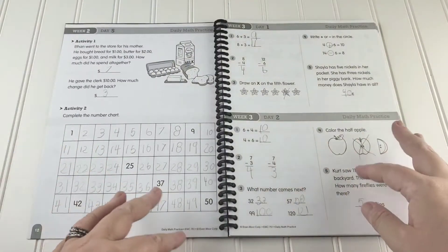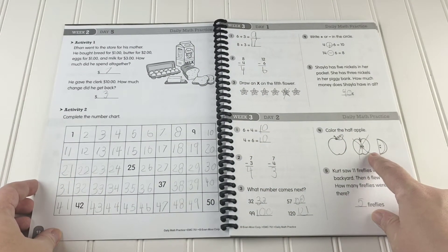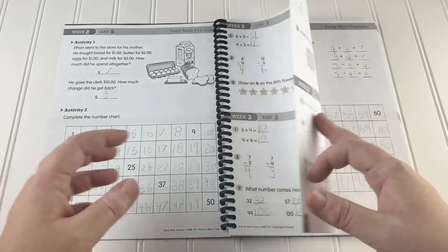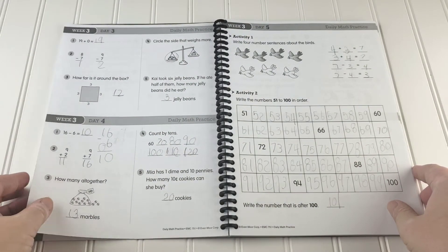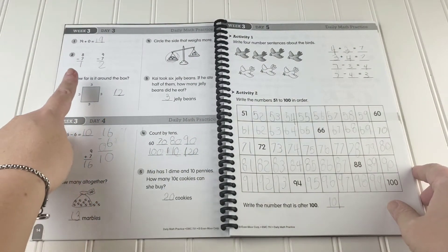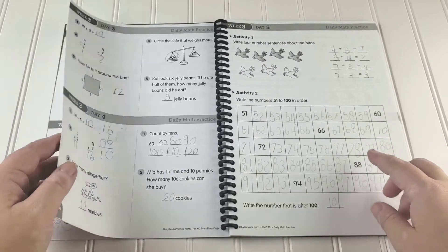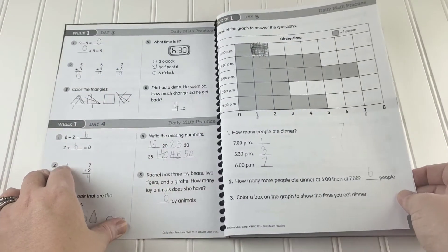So it kind of slowly progresses through different things. We're starting to get into fractions and it also spirals through those things. So it kind of comes back to them. This is something that you could see she did in week one. So it spirals through those things and I really enjoy that.